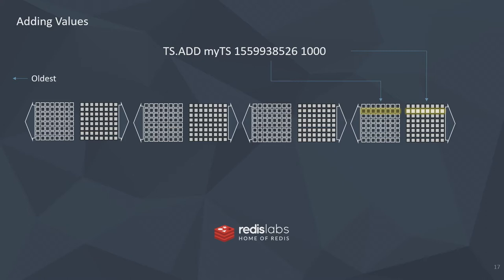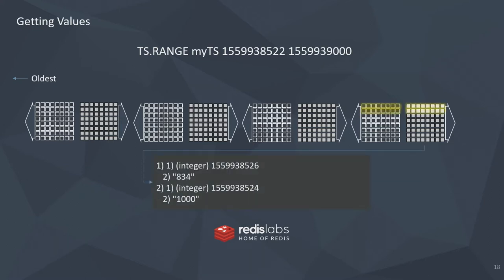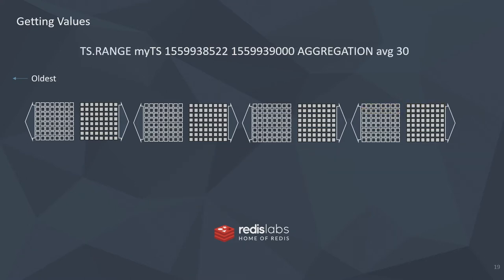What you probably really want to do is get something out of it. We're going to use TS.RANGE — I put a lower and upper bound on it, and it goes through and grabs those values for me. It can go across chunks with no problem, returning the timestamp and the value for each. That's great for ad hoc queries. But it starts getting more interesting when you add an average to it — you add the aggregate keyword to TS.RANGE with the upper and lower bound and get an average over the last 30 seconds.